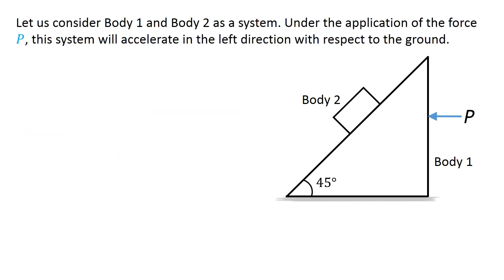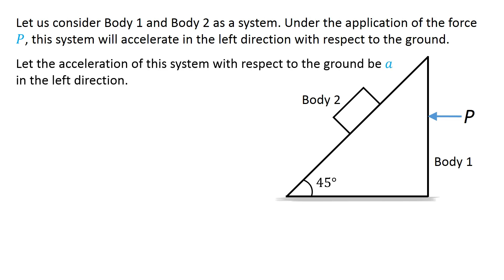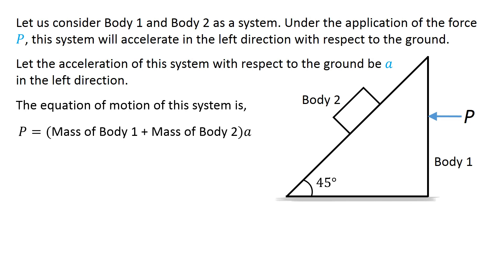Let us consider body 1 and body 2 as a system. Under the application of the force p, this system will accelerate in the left direction with respect to the ground. Let the acceleration of the system with respect to the ground be a in the left direction. The equation of motion of the system is: p equals the sum of mass of body 1 and body 2 times a. Both bodies have the same mass m. Therefore, the acceleration of the system equals p over 2m.